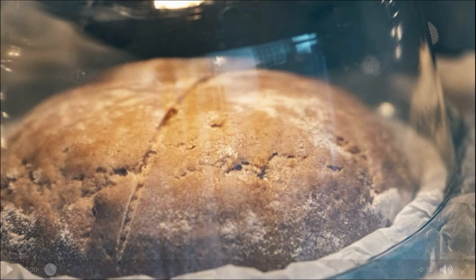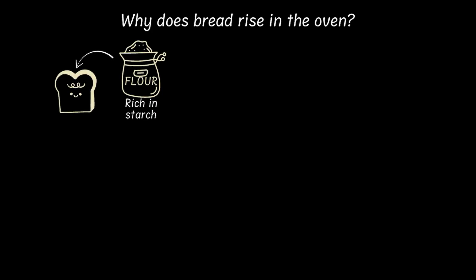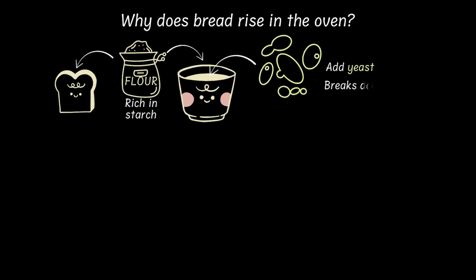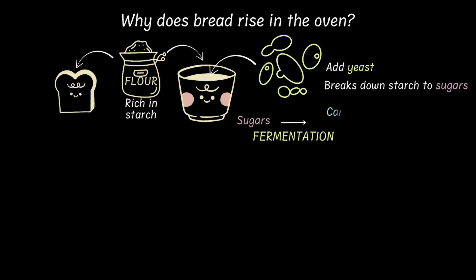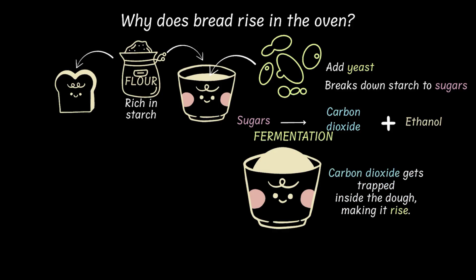This process is the secret behind bread rising in the oven and grape juice turning into wine. Bread dough starts with wheat flour which is packed with starch. When we add yeast along with some warm water, yeast feeds on the starch and breaks it down into sugars. These sugars are then used up in the process of fermentation, releasing carbon dioxide along with a bit of ethanol. This carbon dioxide gets trapped in the stretchy dough, puffing it up. That's why pizza dough is left to rest for hours before baking, because the yeast needs time to pump out enough gas to really fluff up the dough.